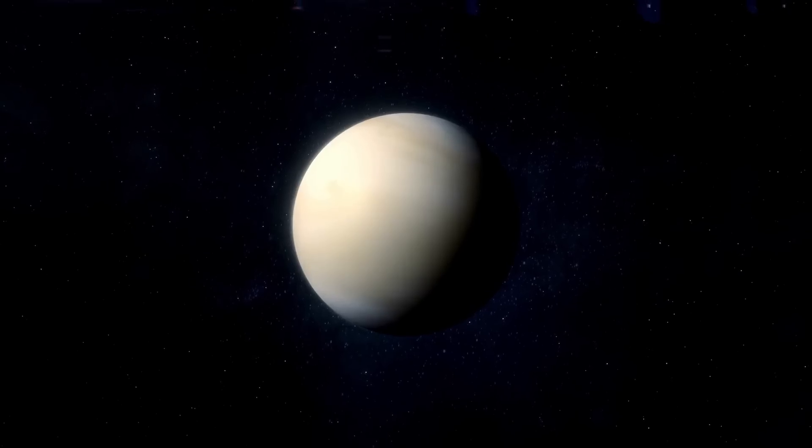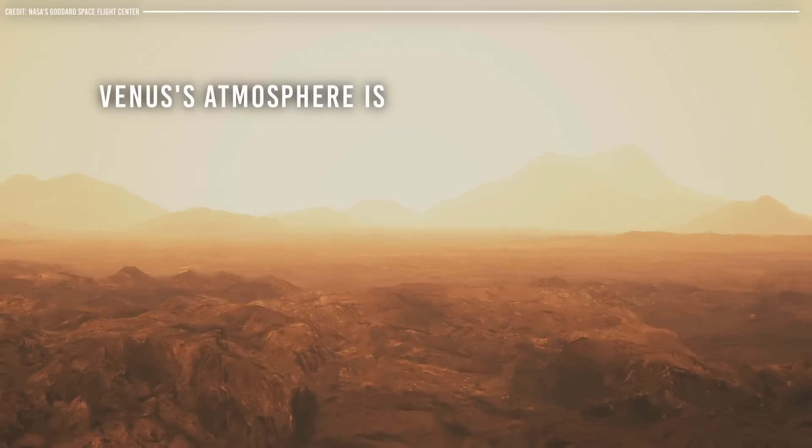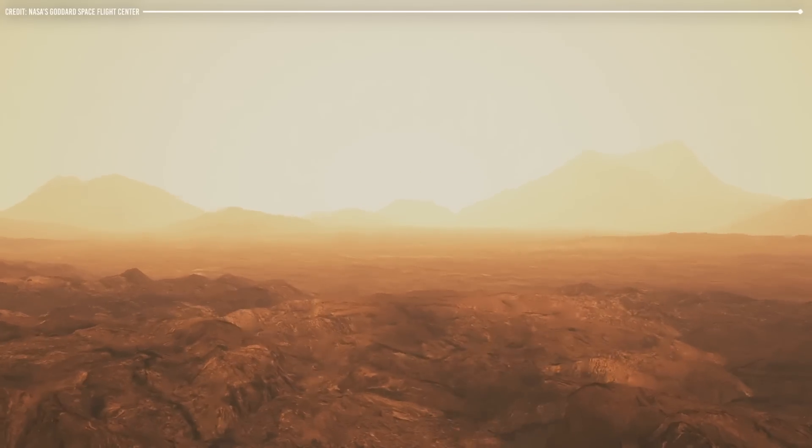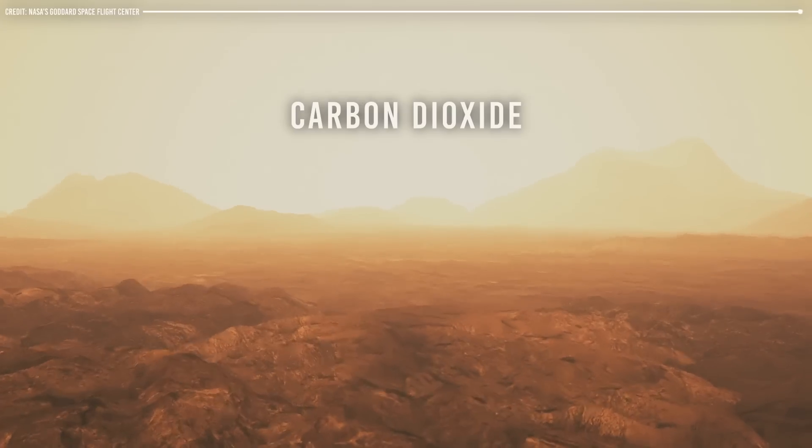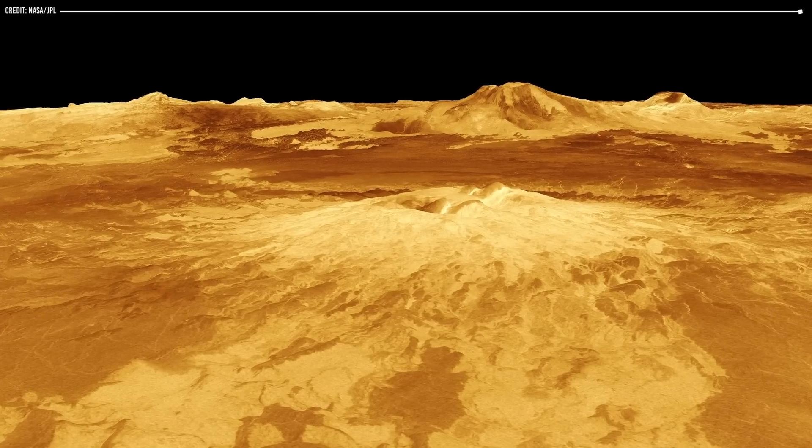Another factor that has turned Venus into a hostile environment is its atmosphere. Venus's atmosphere is around 100 times denser than Earth's atmosphere, and it is composed primarily of carbon dioxide. This means that the atmospheric pressure on the surface of Venus is incredibly high, making it difficult for any spacecraft to land on the planet's surface.